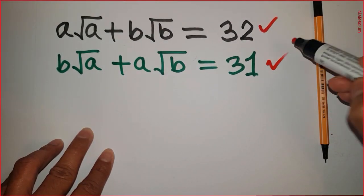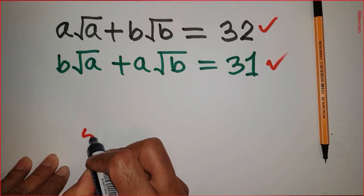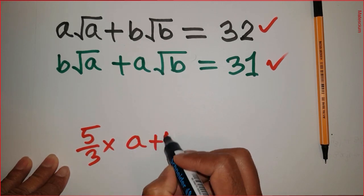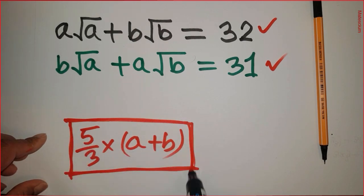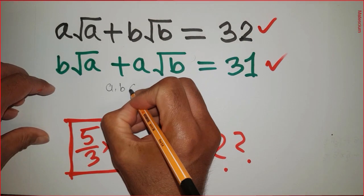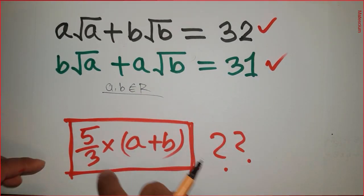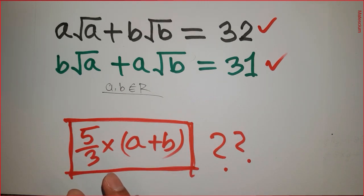We have two mathematical equations. Based on these, we need to find the solution of 5 over 3 multiplied by (a + b), where a and b are both real numbers. It seems pretty complex, but there is a very easy way to find the solution.